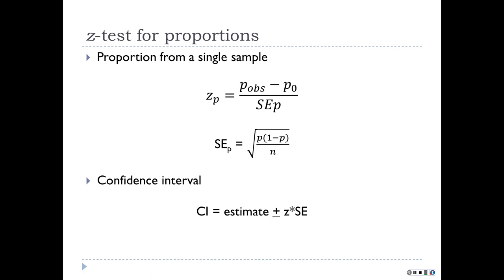Once we've turned it into a z-test, we're home — we know how to do z's. For a two-tailed .05 it's going to be 1.96, and 1.65 for two-tailed .10 or one-tailed .05. So just a simple z situation. For the confidence interval, you figure out z — which is probably 1.96 — and do your proportion plus or minus z times your standard error of the proportion. So your 95% confidence interval is the observed proportion plus or minus 1.96 times the standard error.